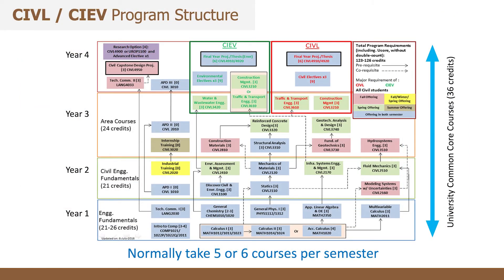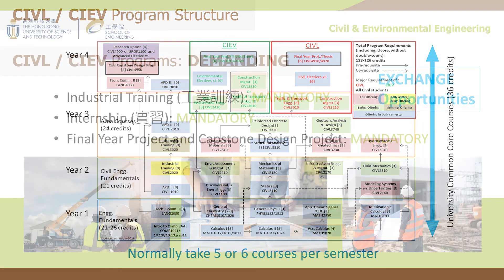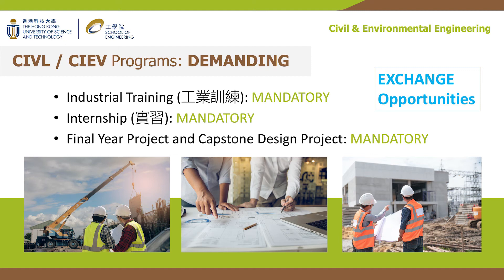This is the program structure of the civil and environmental engineering program. Some courses are offered in fall, some in spring, and some in both semesters. We also have some modules in the summer semester. On average, each student takes about five to six courses per semester, so the workload is not that heavy. What is special about our program is that we require students to complete industrial training, internship, and a final year project and capstone design project before they graduate. These keep students busy but are fruitful and make them more marketable and easier to find jobs.